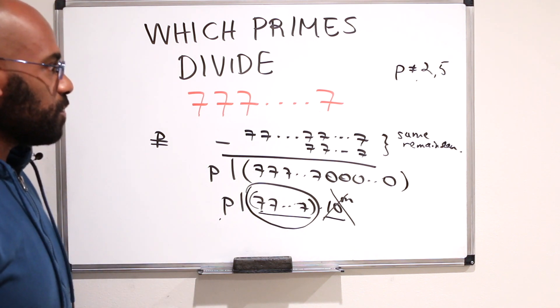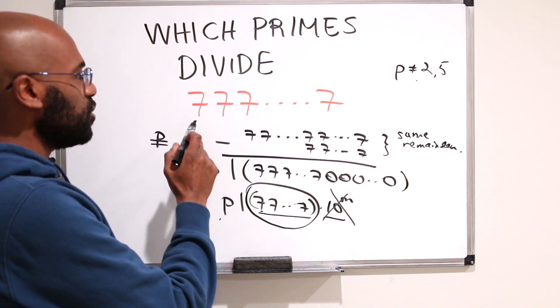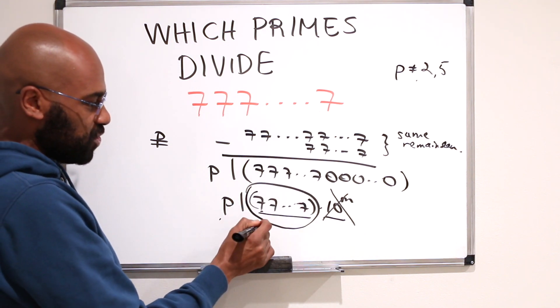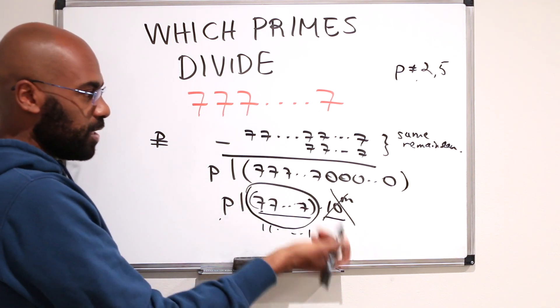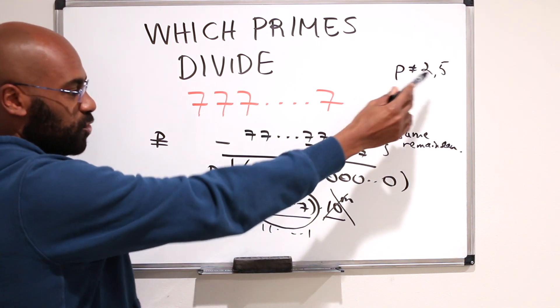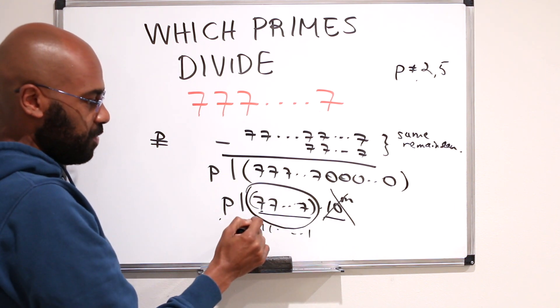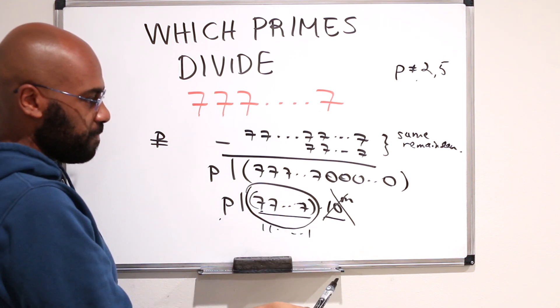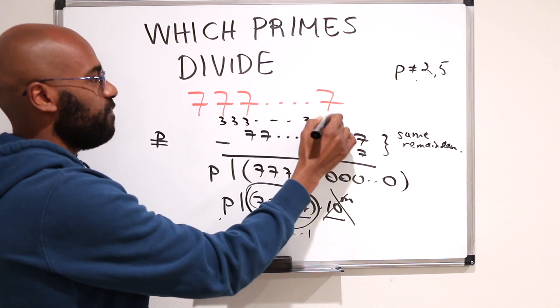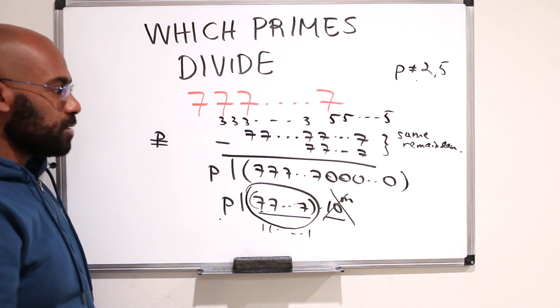It's kind of a cool argument using this cascading list of numbers with 7s in order to prove that this prime p that's not 2 or 5 has to divide a number like this. Now you can notice here that we can make an argument that's very similar if we change this from a bunch of 7s to something else. For example, if we change this to a bunch of 1s, we get the same phenomenon going on. We can change it to a bunch of 3s and we have the same phenomenon, or a bunch of 5s and we have the same phenomenon as well, or a bunch of 9s.